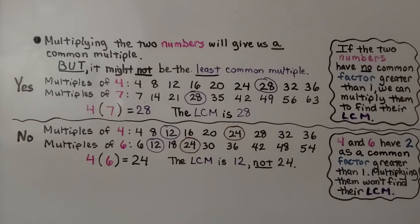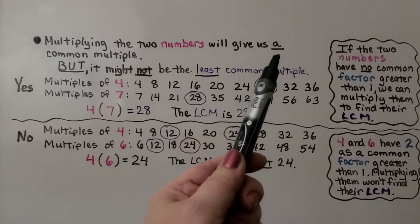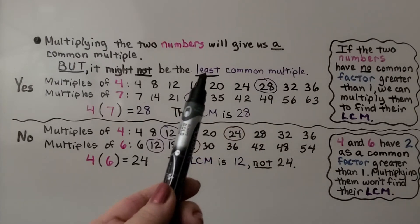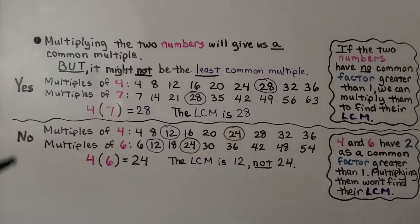Multiplying the two numbers will give us a common multiple, but it might not be the least common multiple. So for 4 and 7, yes, it will work, multiplying them together.